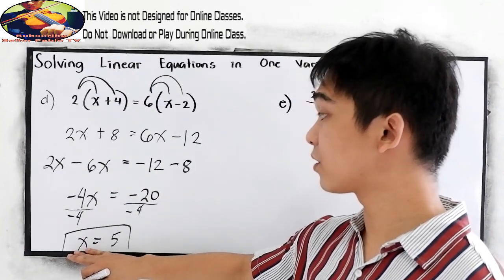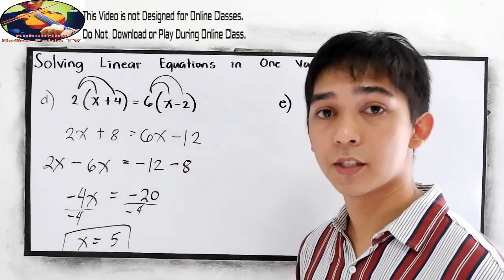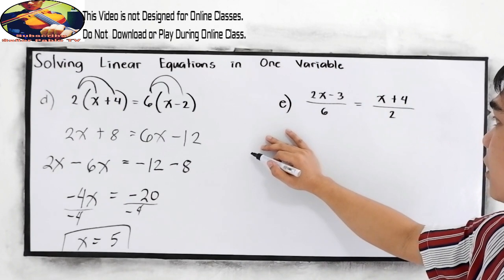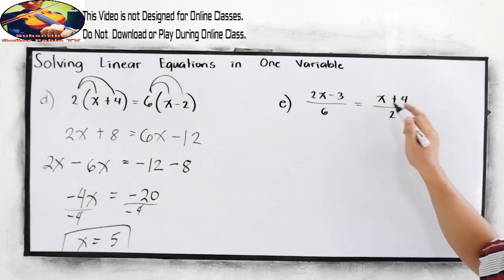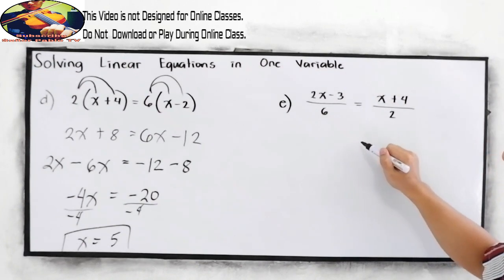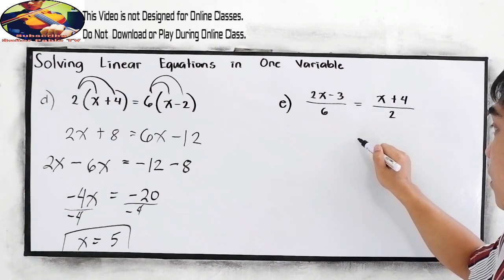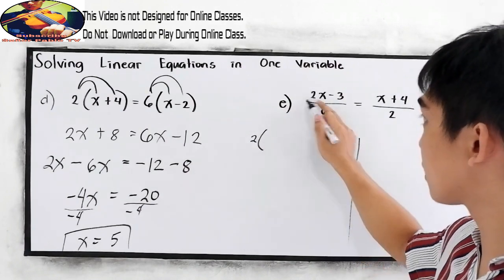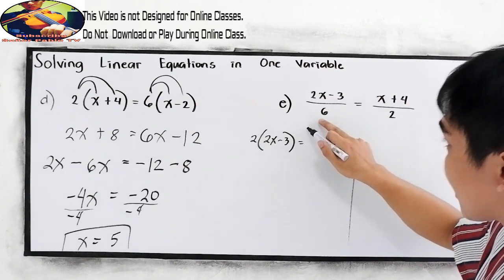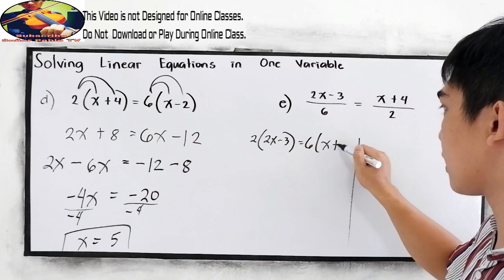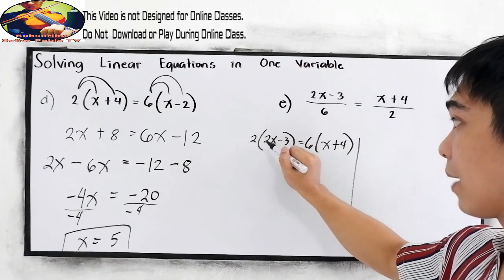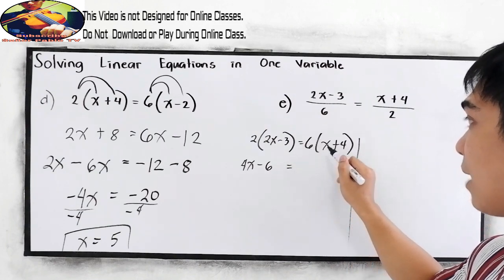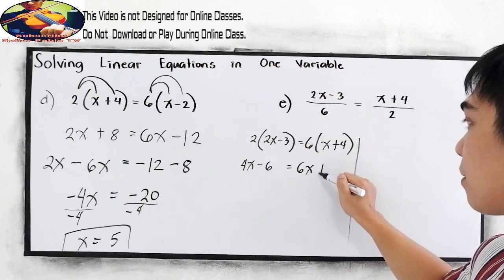You can check your answer by substituting the value of x into the original equation. For our fifth example: 2x minus 3 over 6 is equal to x plus 4 over 2. There are a lot of ways to solve this. First, we can cross multiply: 2 times (2x minus 3) equals 6 times (x plus 4). So 2 times 2x is 4x, and 2 times negative 3 is negative 6, equal to 6 times x, which is 6x, and 6 times positive 4, which is positive 24.